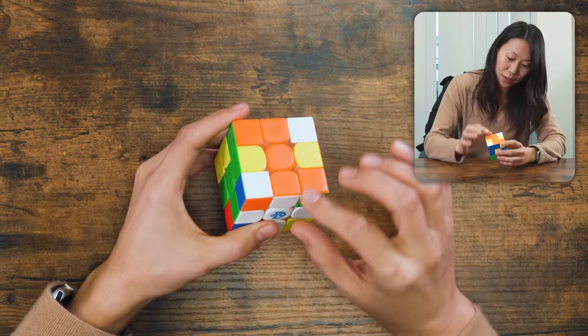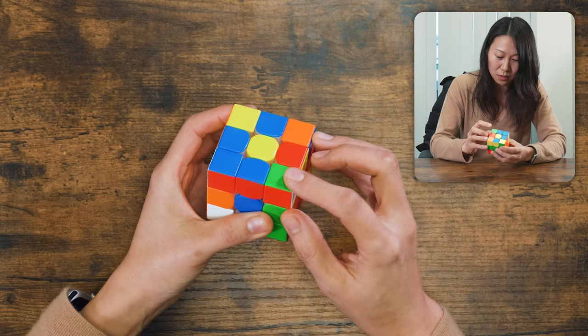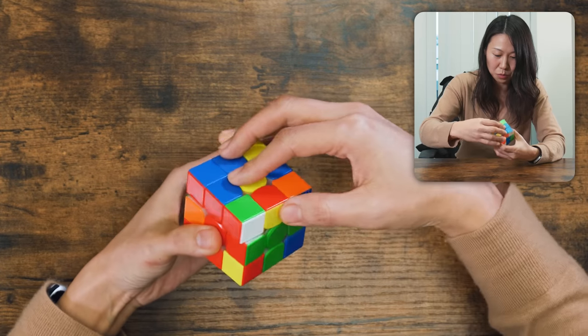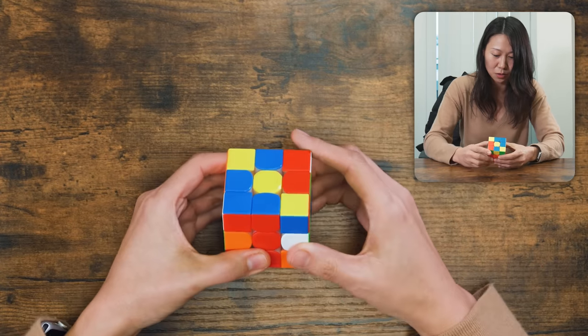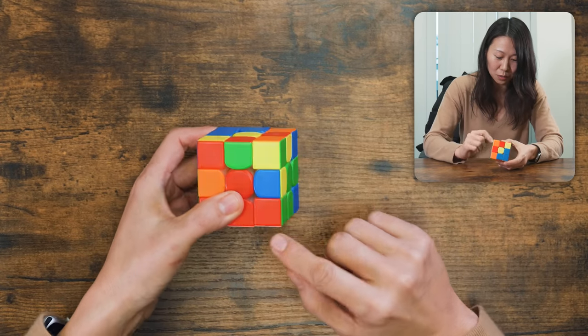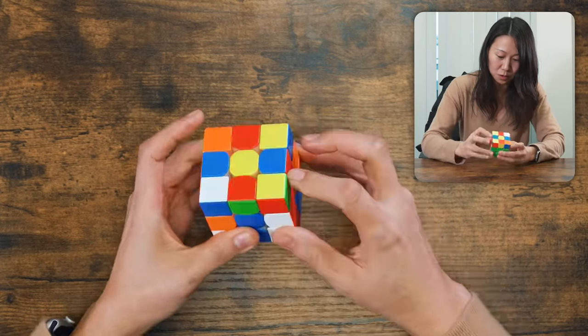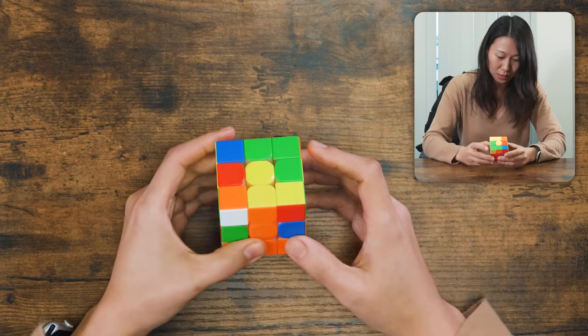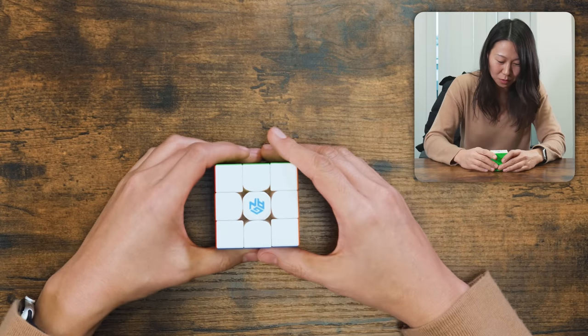And now I have to find the corner white. This side is green, here is red. I move it to green and red. So I'm just doing this. Now the white is on the bottom. Now I move all the whites to one side.